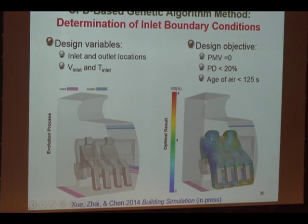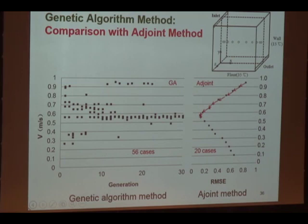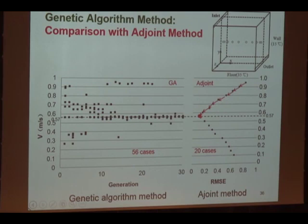Comparing the two methods: the genetic algorithm needs a lot of initial cases to identify the best one. The adjoint method needs only about 40% of the cases of the GA method, but may find only a local optimal, not the global optimal. That's why in a lot of inverse modeling applications, researchers combine both methods — the adjoint method is faster, and the GA can find the overall global optimal.